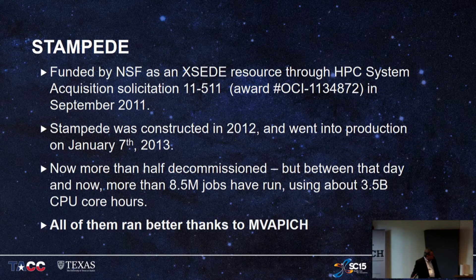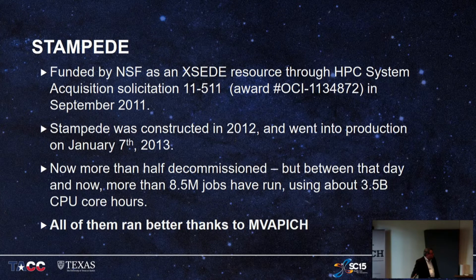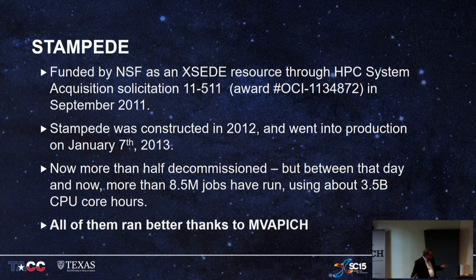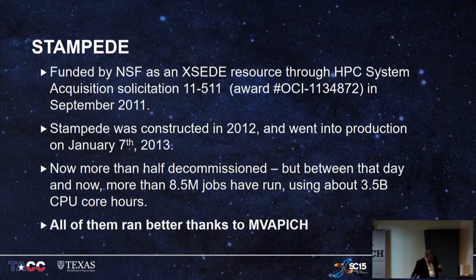Starting with the Stampede system, funded in 2011, we made the OSU team a part of our project team — our first funded collaboration, beginning in 2011. We put the machine into production on January 7th, 2013, and it officially ended January 7th, 2017, four years later, though we've extended it while deploying the next machine. We made MVAPICH the default MPI early on. Probably millions of those 8.5 million jobs ran a lot better because of MVAPICH.